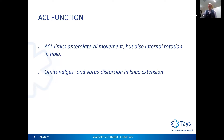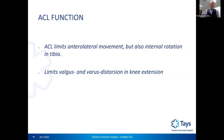The anterior cruciate ligament limits anterolateral movement and internal rotation of the tibia. In knee extension, it also limits valgus and varus distortion, providing additional stability alongside the MCL and LCL ligaments. Now we move on to the clinical part of the presentation.